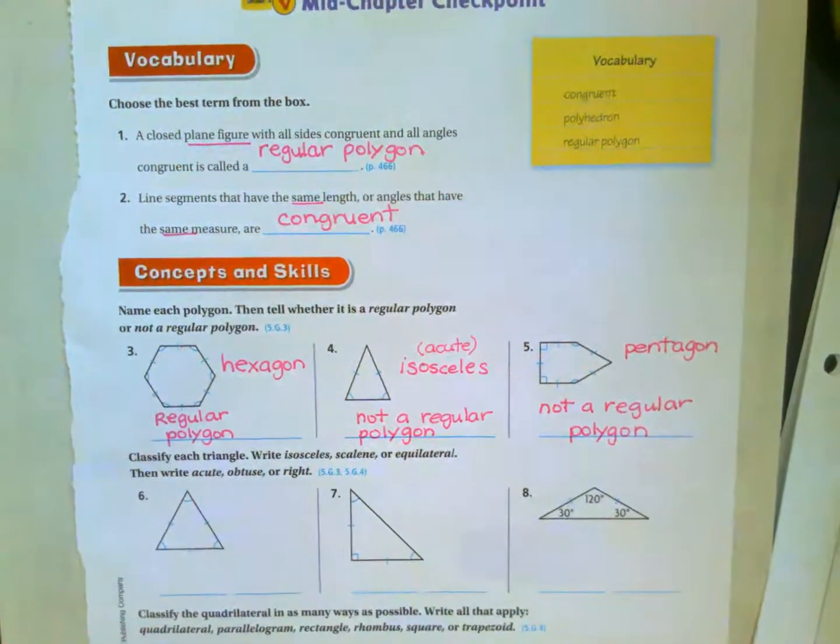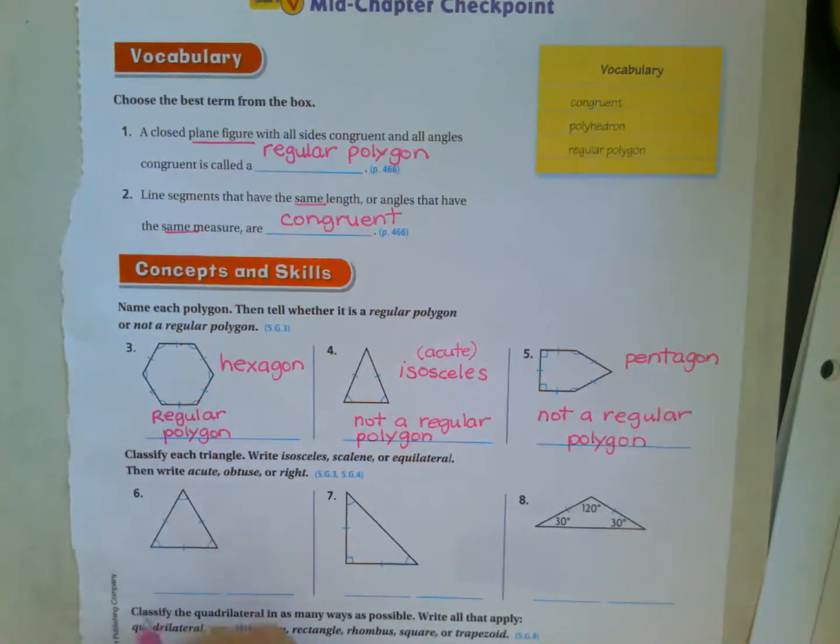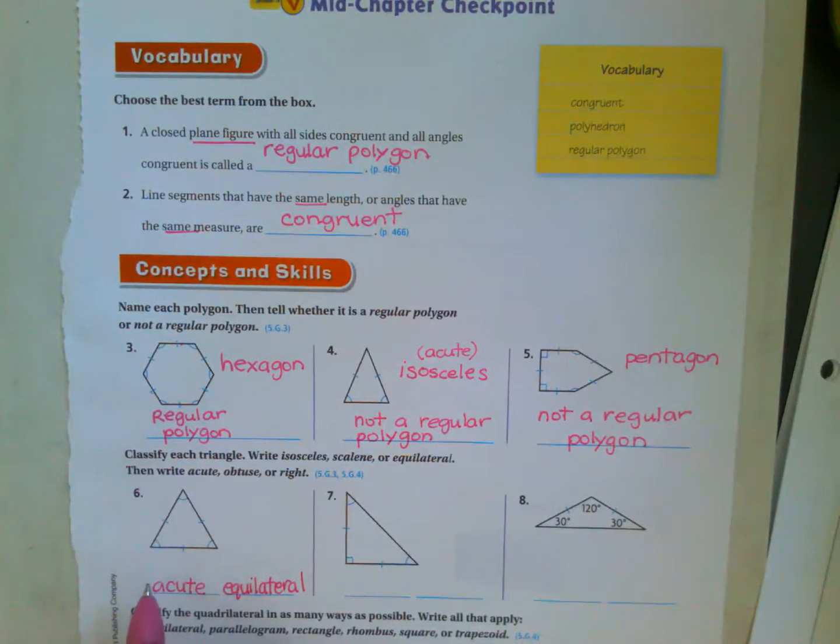Identify each triangle. So all the sides are the same. All of the angles are the same. They do tell you that it's less. So this is actually an acute equilateral. Equilateral. I know it's equilateral because all the sides are the same. And equilateral triangles, all the angles are the same length, which means they're all 60 degrees, which is less than 90.